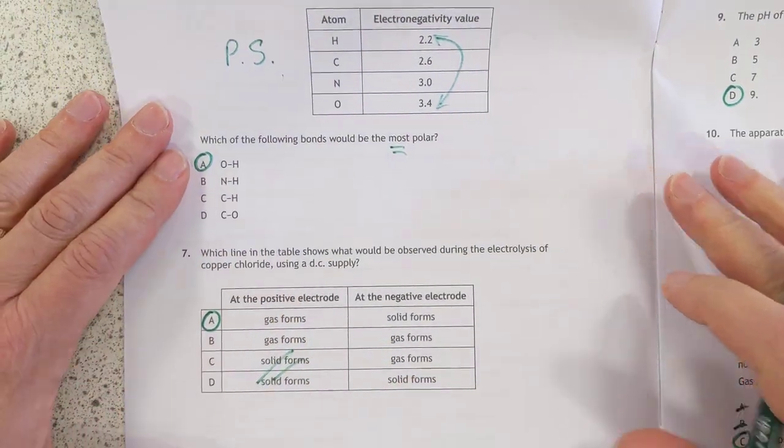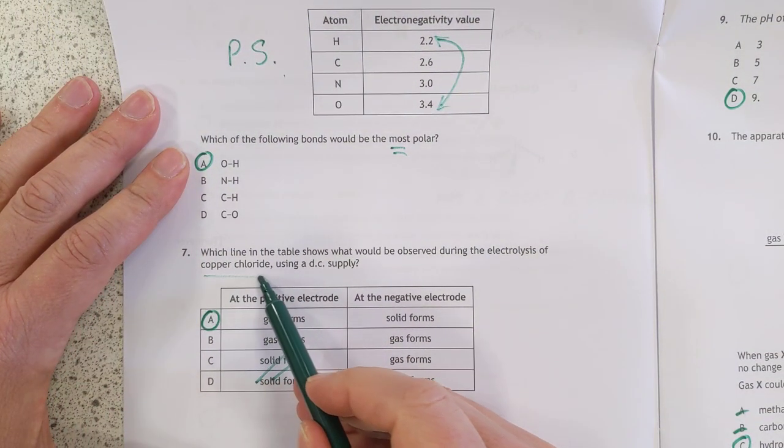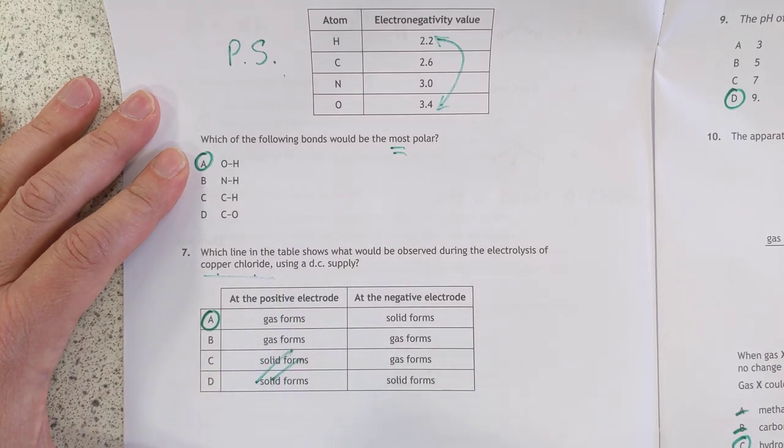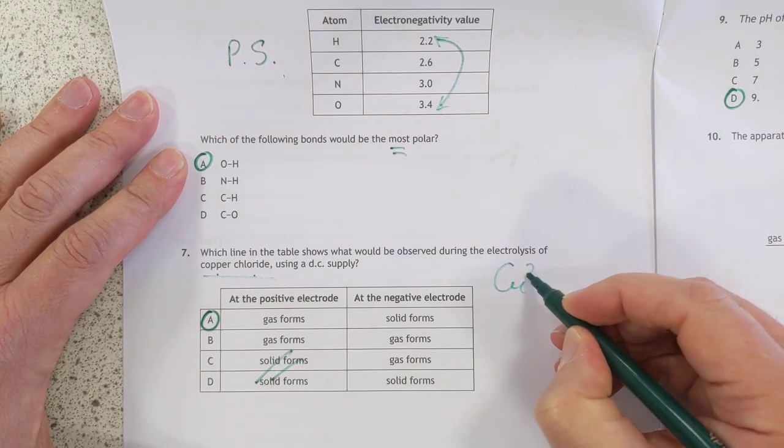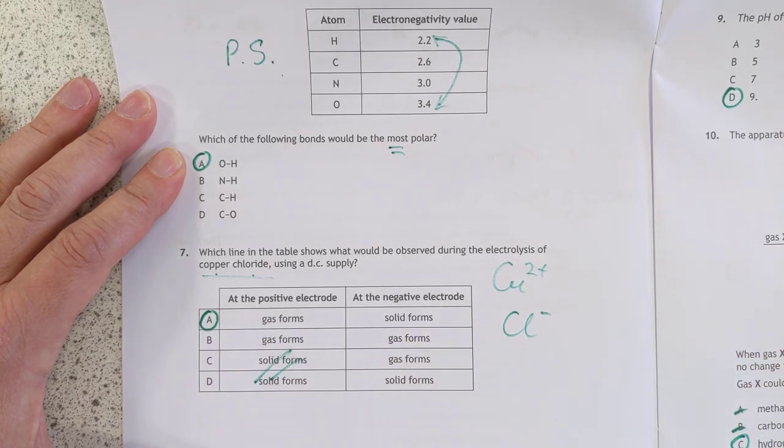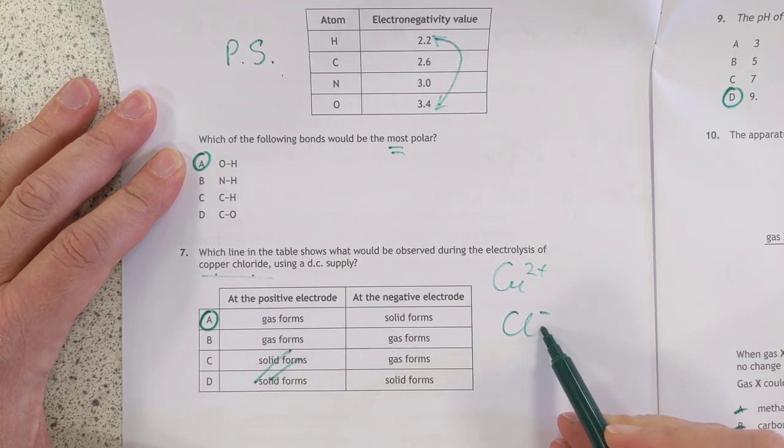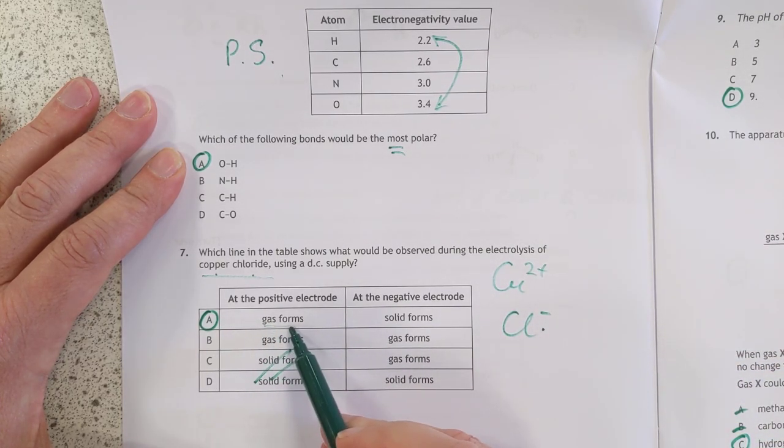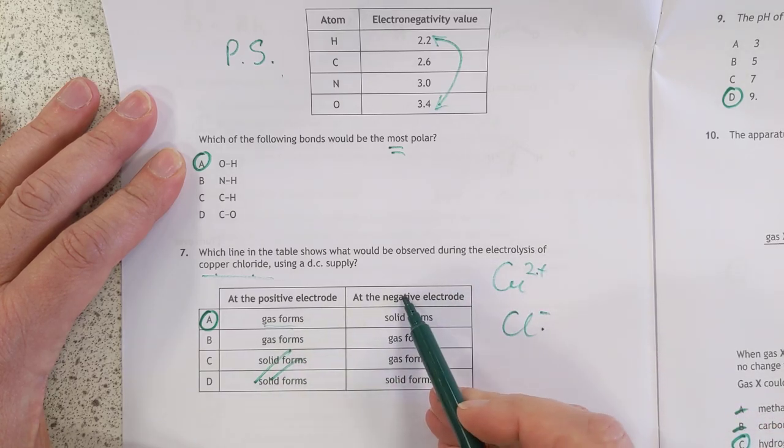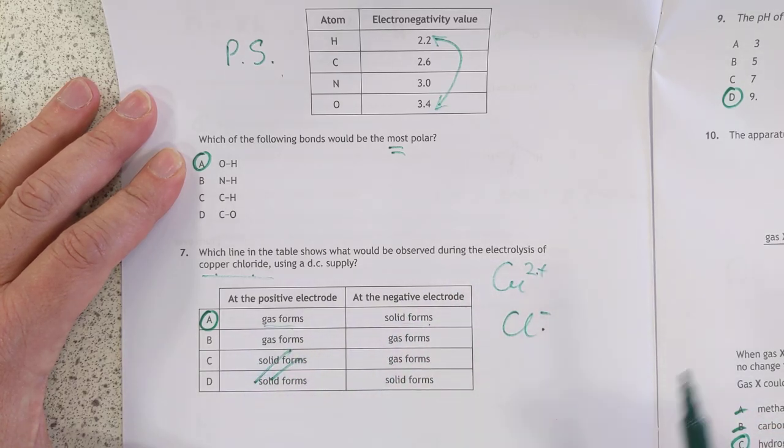Which line shows what would happen if you electrolyzed copper chloride? You're going to make copper and you're going to make chlorine gas. Copper starts off as 2+, and chlorides start off as 1-, so these will be attracted to the positive electrode, so you're going to get a gas forming, and these will be attracted to the negative, and you're going to form your solid copper. So it's A.